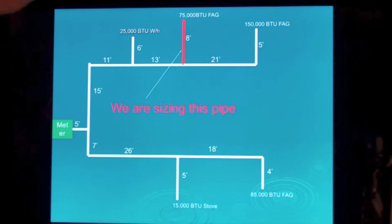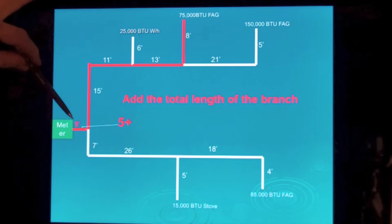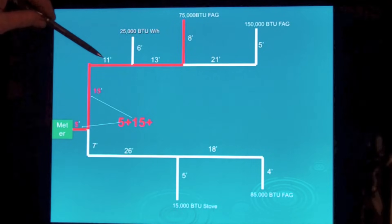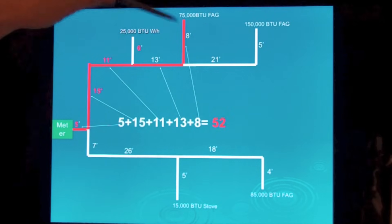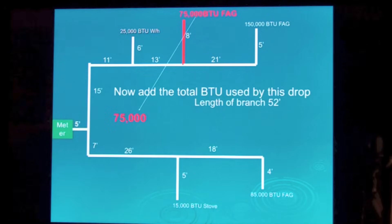I'm going to size this one here. We're going to take this length. Five feet. Remember, it's just like it's one pipe without any other pipes there. Five feet, fifteen feet, eleven, thirteen, and eight. That's going to make fifty-two feet. How many BTUs? Seventy-five thousand. Fifty-two feet, seventy-five thousand.